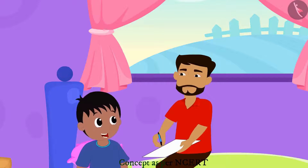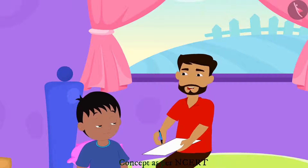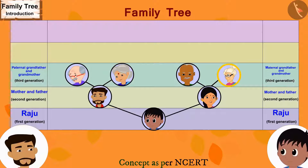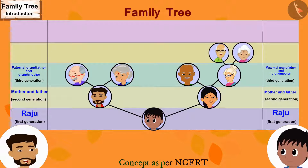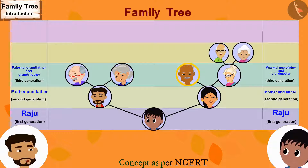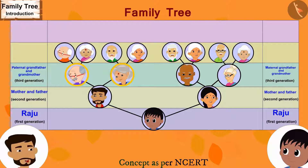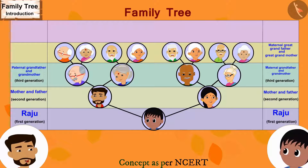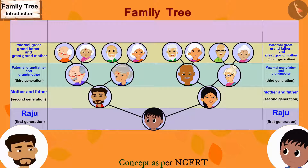Raju thinks the family tree is now complete, but his father says no — there are yet more people to add. For Raju's maternal grandmother's parents and maternal grandfather's parents, two lines are drawn and their names are written. The paternal grandfather and grandmother's parents are also added in the same way. Raju asks about his relationship with all these people, and the father explains they are his maternal and paternal great-grandfather and great-grandmother — this is the fourth generation.